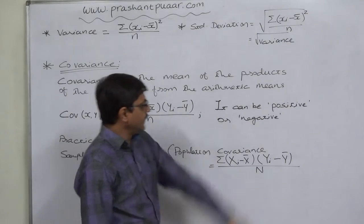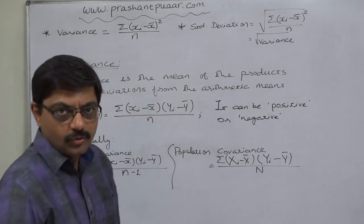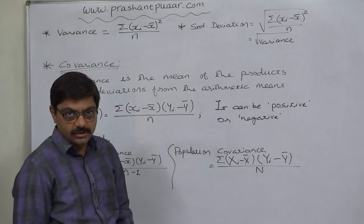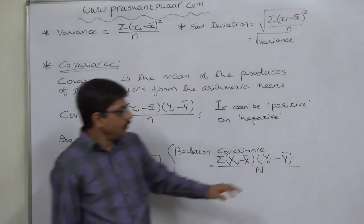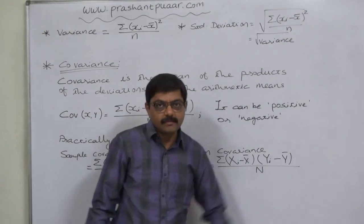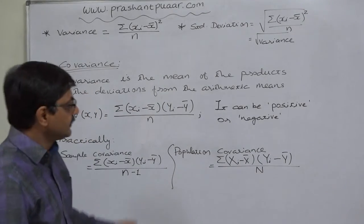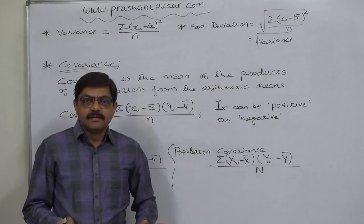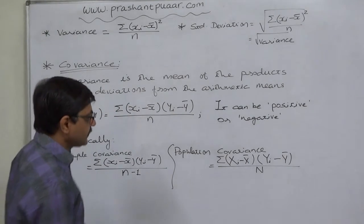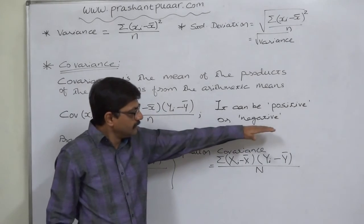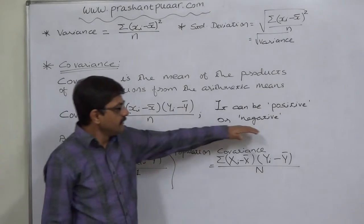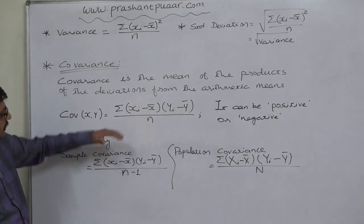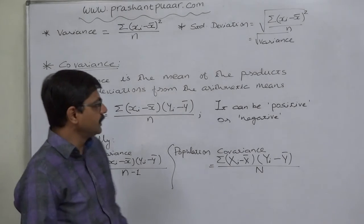The covariance can be positive or negative according to the type of relation between the two variables x and y. As previously discussed, there can be positive correlation or negative correlation between the two variables. If in general most of the values of the dependent variable change in the same direction as the values of the independent variable, there will be positive correlation. And if the values of the two variables change in opposite directions, there can be negative correlation. Accordingly, the sign of covariance can be positive or negative.